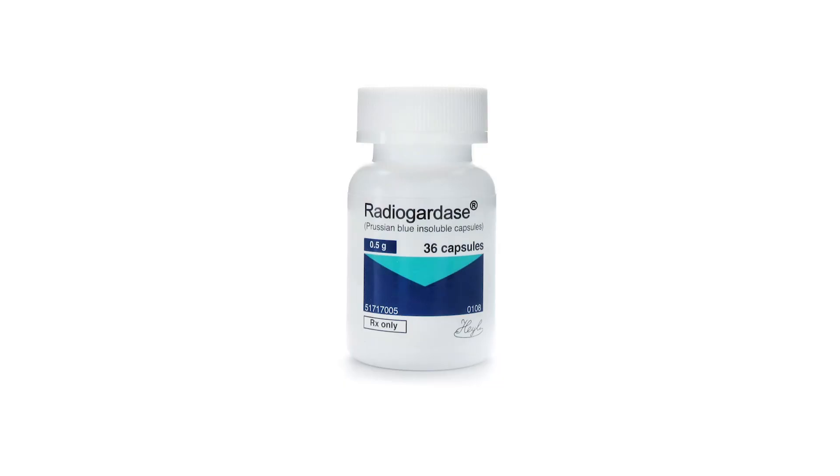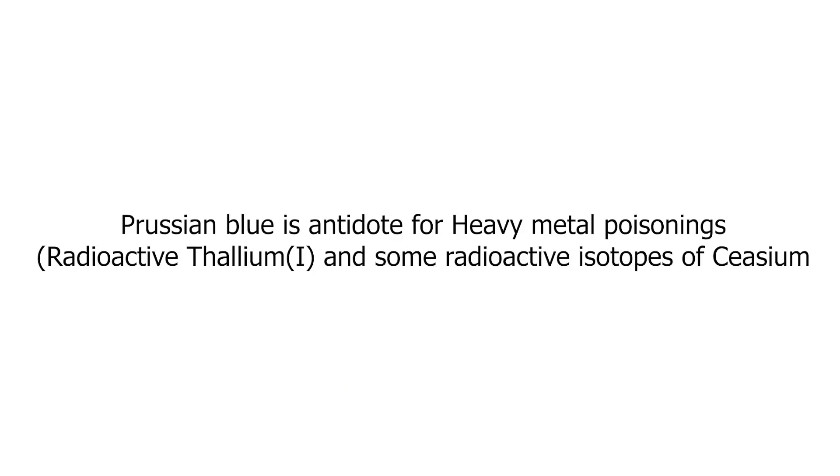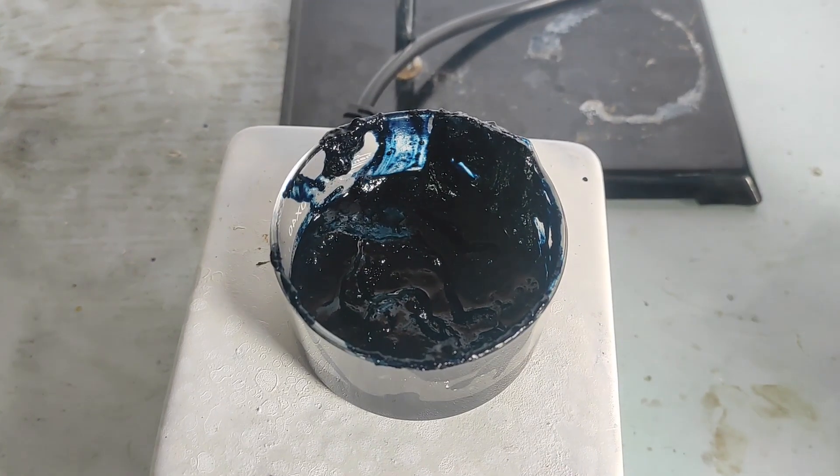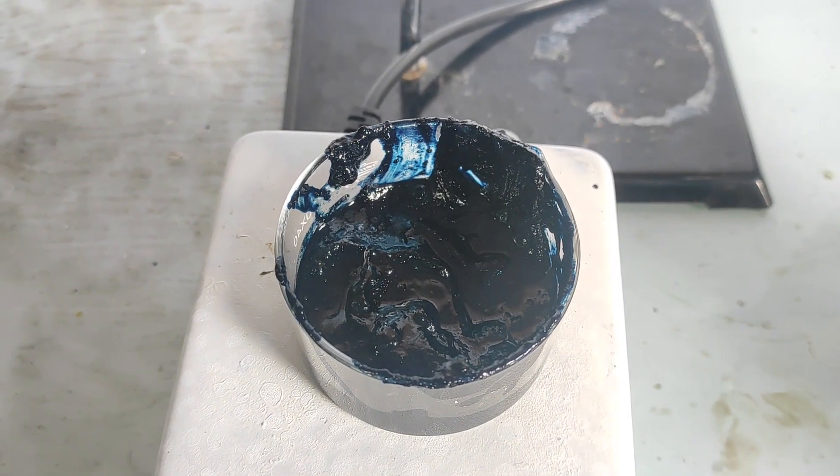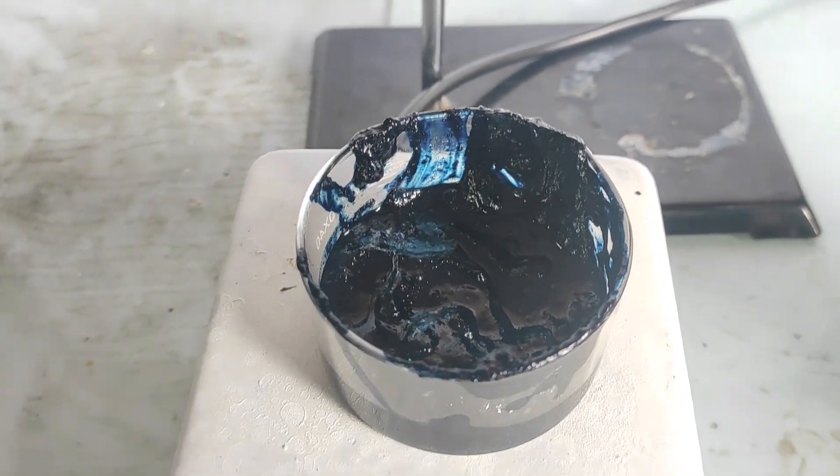A surprising use of Prussian blue is its use in medicine. Orally administered Prussian blue is an antidote to certain heavy metal poisonings. Its more antique use is in batteries and in analytical chemistry, but it was mostly phased out.